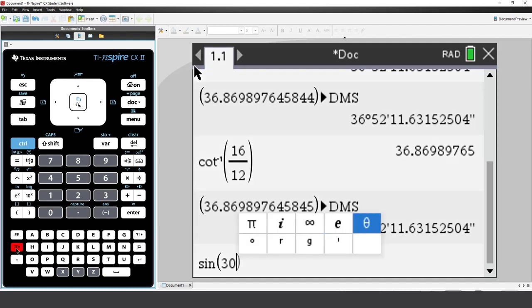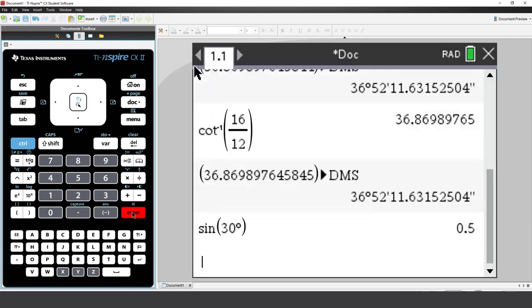Press the symbols key. Select the degree sign. Now the calculator will read your angle as degrees, ignoring the current mode setting for radians.